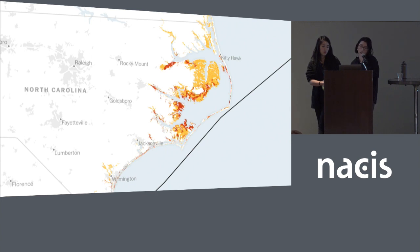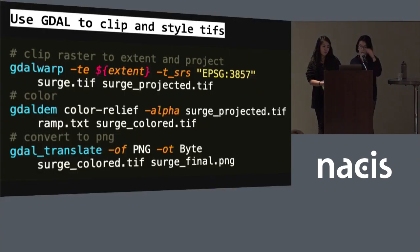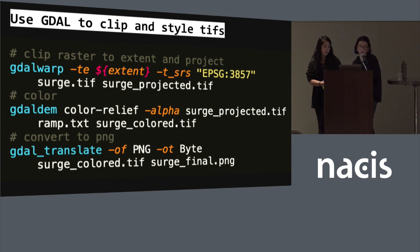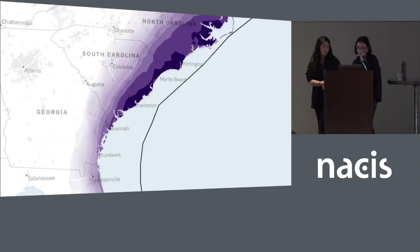We can also add raster data using the same workflow. For storm surge flooding, for example, we use GDAL on the command line. We have the setup written in a Makefile — like Dylan did — so it's easy to replicate. We clip the raster data to the extent from our parameters file, color it with GDAL, and convert it to a flat PNG. This way we can do it over and over again using the same base map.